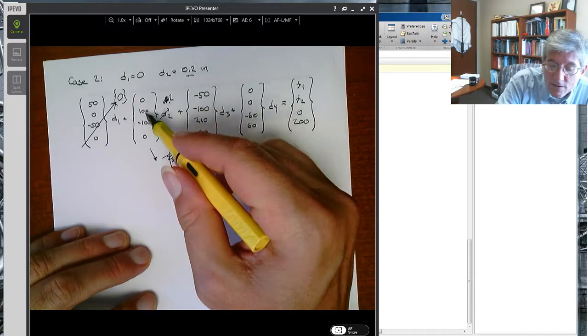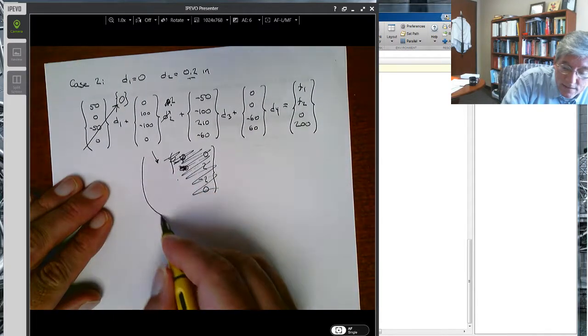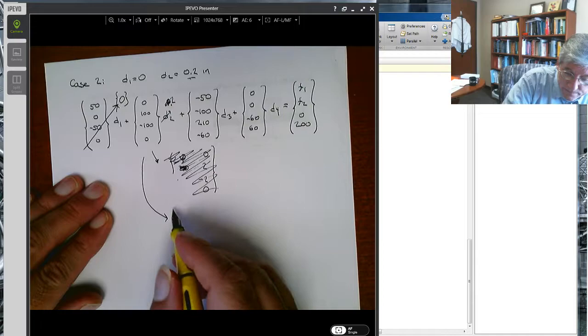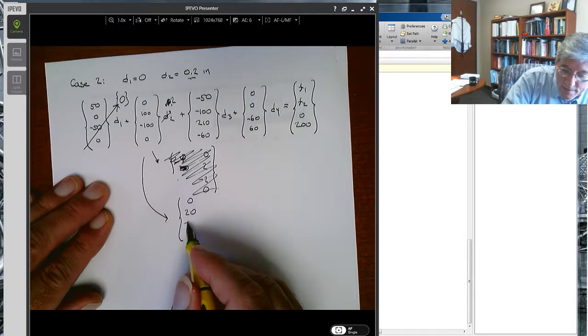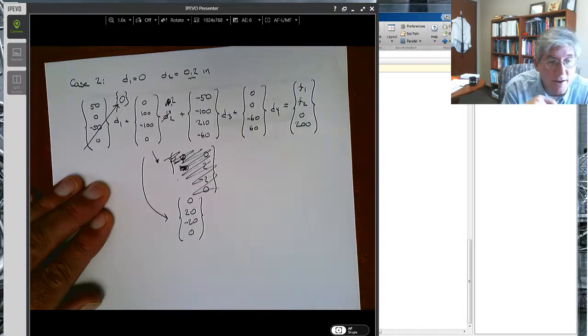All right, so it's what I originally had. If d2 goes to 0.2, there's no reason why I would go to something different. It's 0.2. Then 0.2 times this column vector would give me the following: 0, 20, minus 20, and 0. Hopefully I did that right.